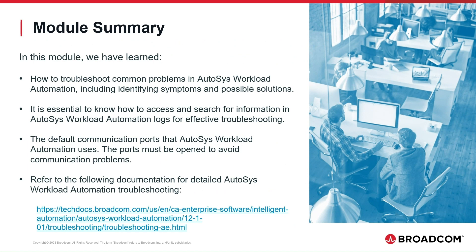In this module, we have learned how to troubleshoot common problems in Autosys Workload Automation, including identifying symptoms and possible solutions. It is essential to know how to access and search for information in Autosys Workload Automation logs for effective troubleshooting. We also covered the default communication ports that Autosys Workload Automation uses — the ports must be open to avoid communication problems. Refer to the following documentation for detailed Autosys Workload Automation troubleshooting.